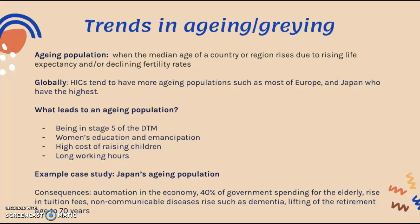Europe and Japan have the highest proportions of aging populations in comparison to the rest of the world. What leads to an aging population? Being in stage five of the demographic transition model, women's education and emancipation, high costs of raising children, and long working hours.